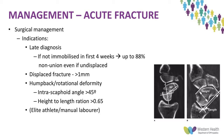Moving on to surgical management of the acute fracture: indications include late diagnosis — if the wrist is not immobilized in the first four weeks, up to 88% of patients progress to non-union even with an undisplaced fracture. Displaced fractures of more than one millimeter, humpback or rotational deformity (intrascaphoid angle more than 45 degrees on lateral projection, or height-to-length ratio greater than 0.65), are all indications for surgery. A soft indication is an elite athlete or manual laborer seeking early return to sport or work.